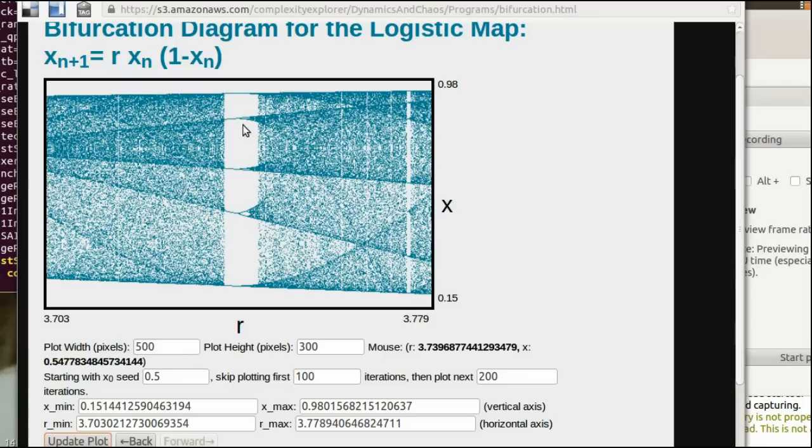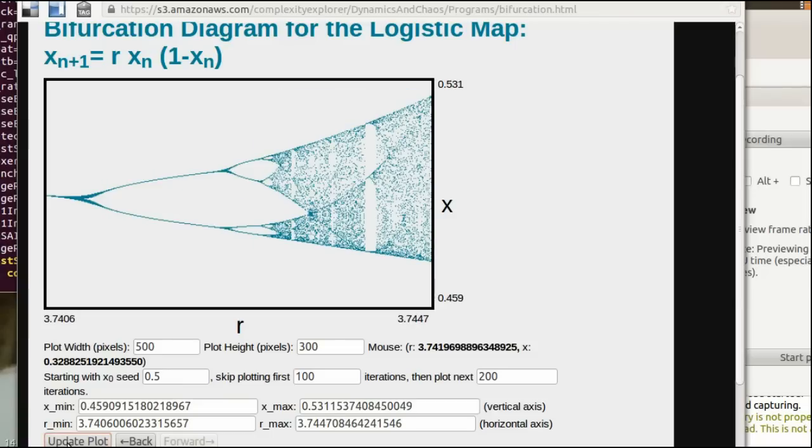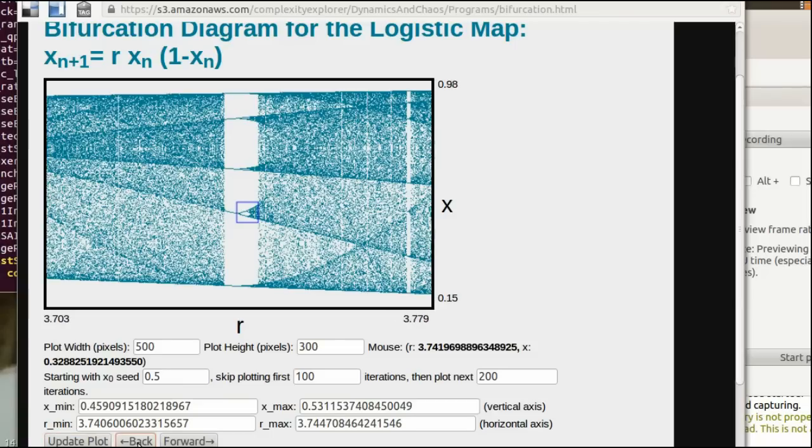So this is a period five window. Let's zoom in here just for fun. Update plot. We can see that same period doubling structure again. Let me go back.